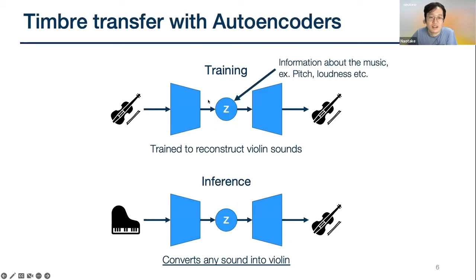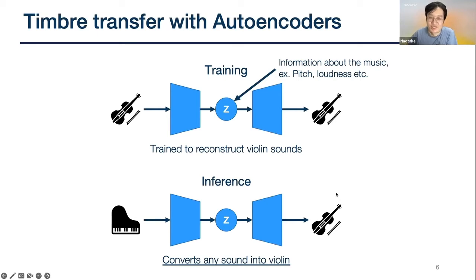The autoencoder will learn information about the music — like pitch and loudness. During inference, you can feed it any sound. The encoder will try to make sense of what it was fed and output a latent variable. The decoder only knows how to reconstruct violin sounds, so it's not going to create the piano sound — it's going to transform that into a violin sound. Thus you can do this sort of timbre transfer effect using autoencoders.